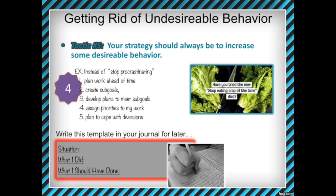For lecture activity four, write down five alternative behaviors that you want to increase. If you want to stop procrastinating, you could write: plan work ahead of time, create sub-goals, develop plans to meet sub-goals, assign priorities to my work, plan to cope with diversions. If you want to start doing something, write five things that would guide or motivate you toward that good behavior. For example, if your self-change project is to start running, you could: watch motivational documentaries on running, buy running clothes, plan out your route, get a running app that teaches incremental running, talk to other runners. Be creative and brainstorm — they don't all have to be perfect answers.